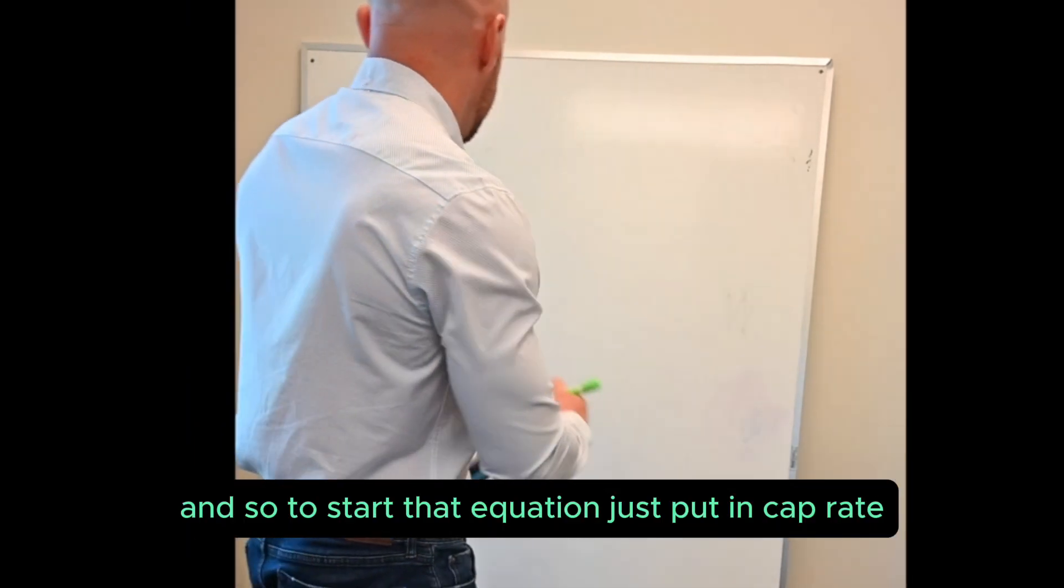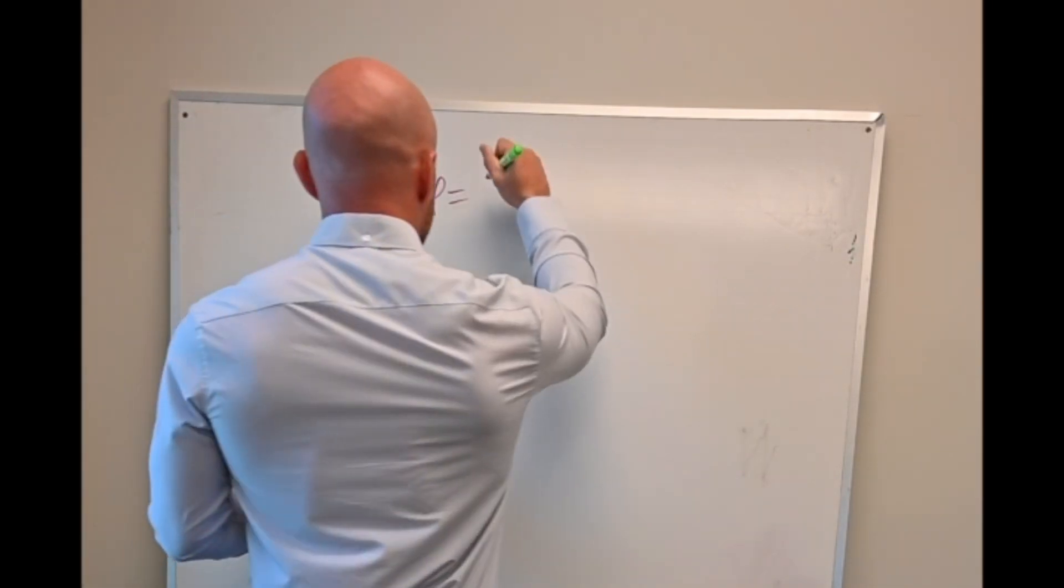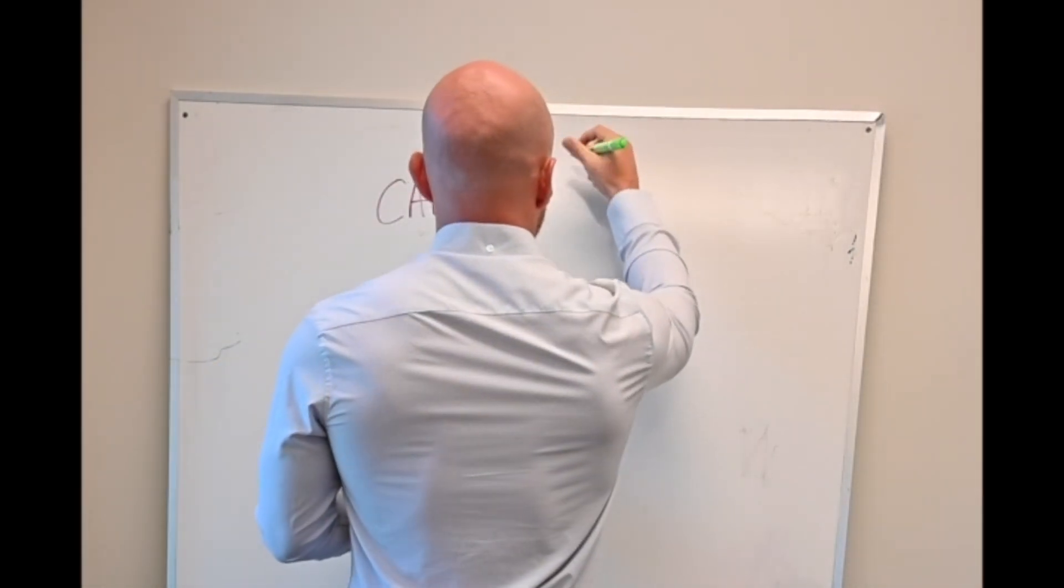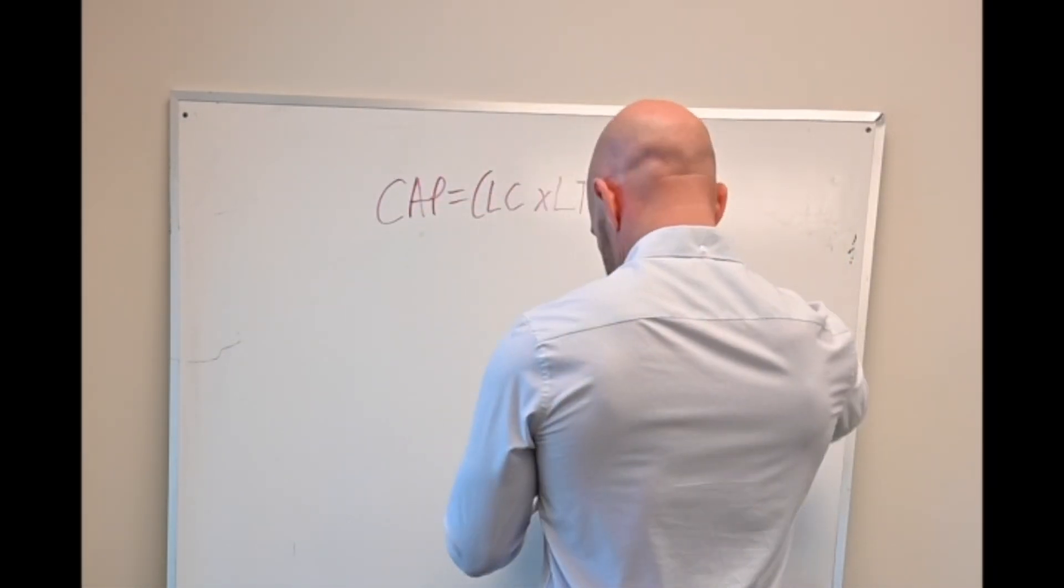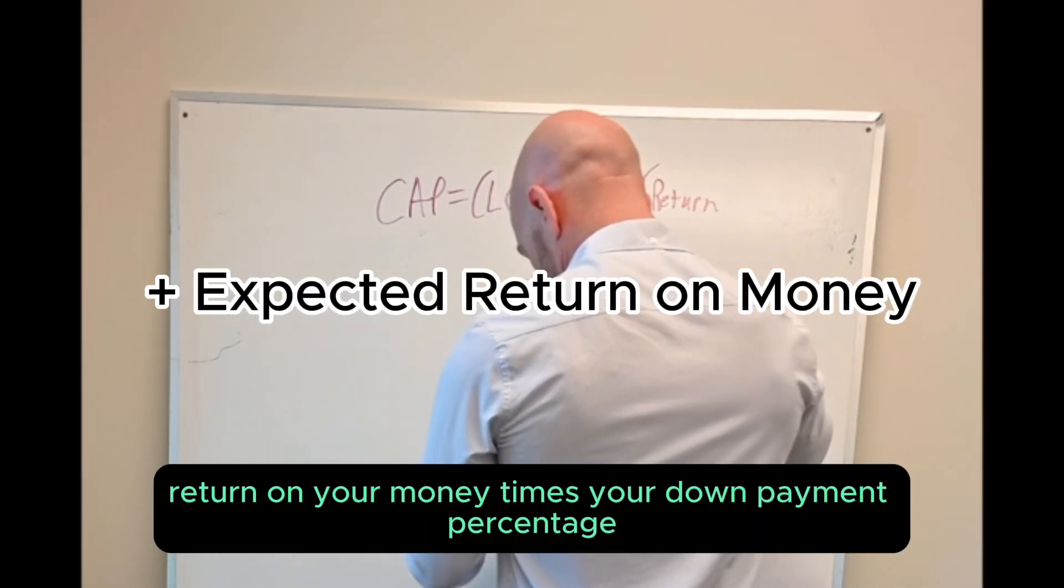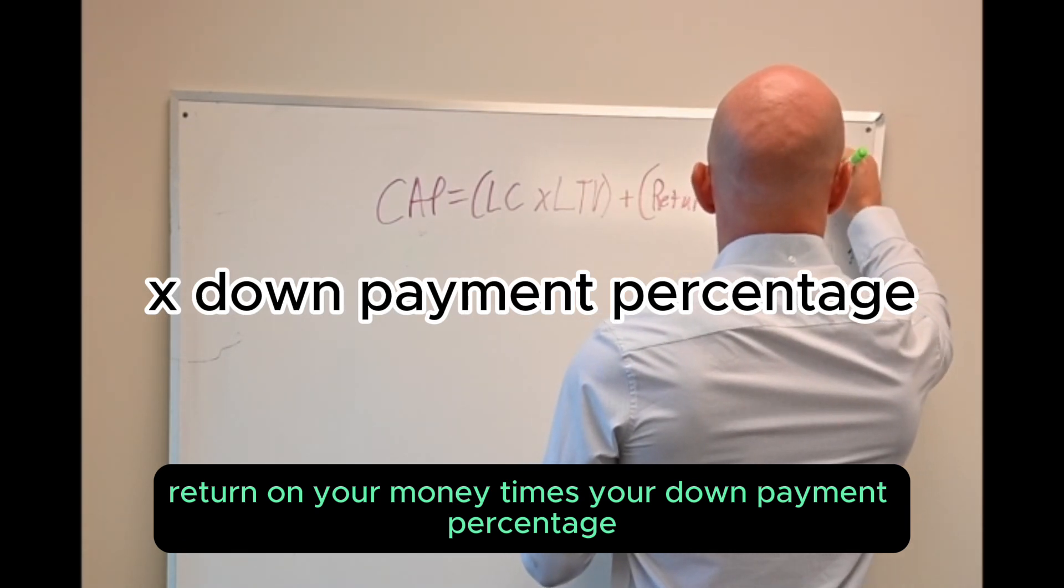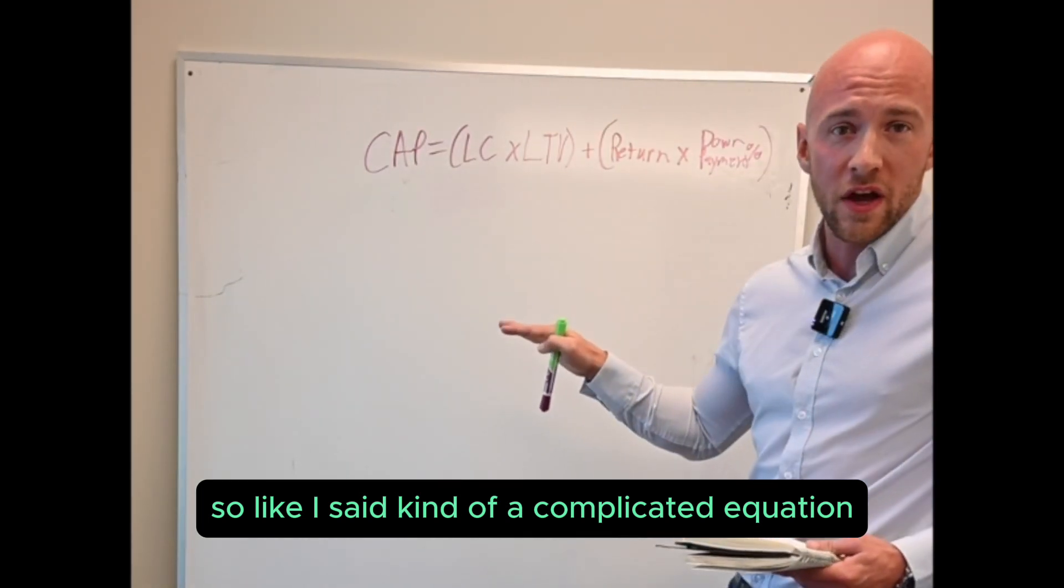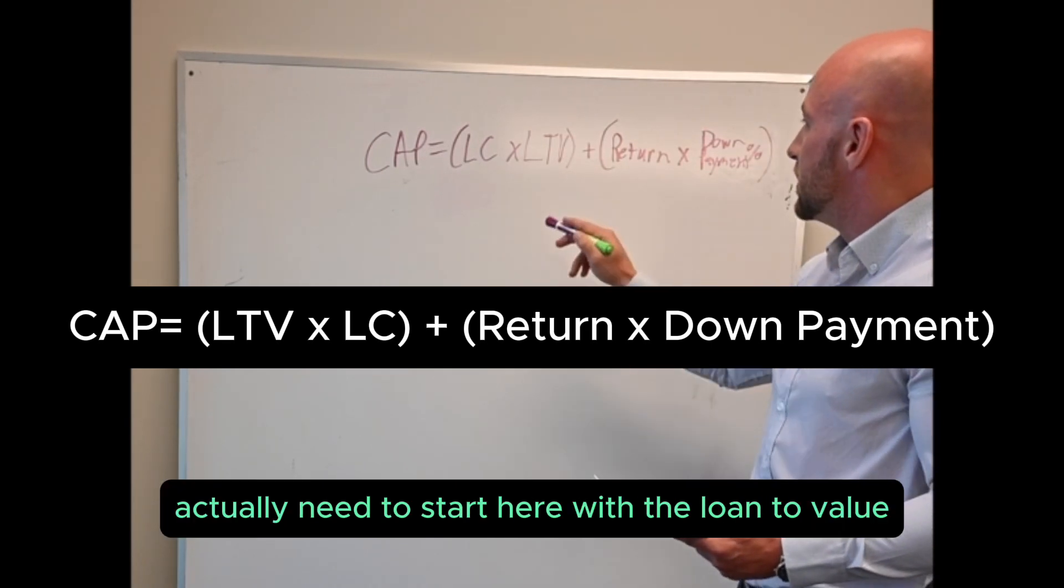To start that equation, the cap rate equals the loan constant times loan to value, put those both in parentheses, plus your expected return on your money times your down payment percentage. It's kind of a complicated equation so let's break it down piece by piece. As I see going left to right, I actually need to start here with the loan to value to tell you where to start.